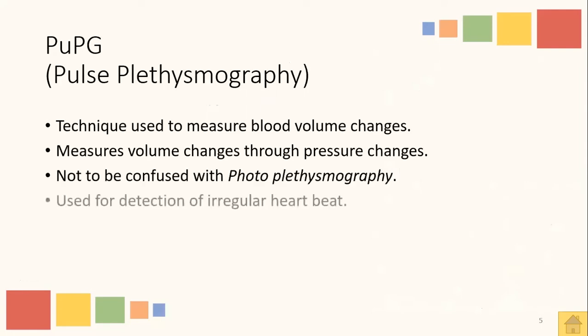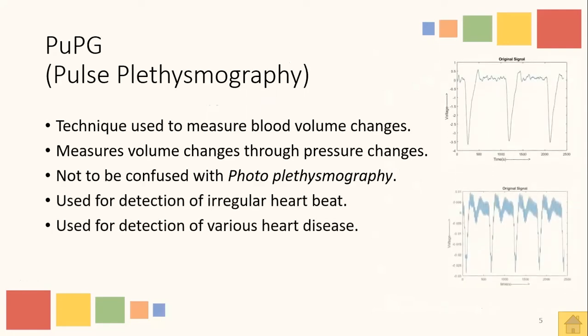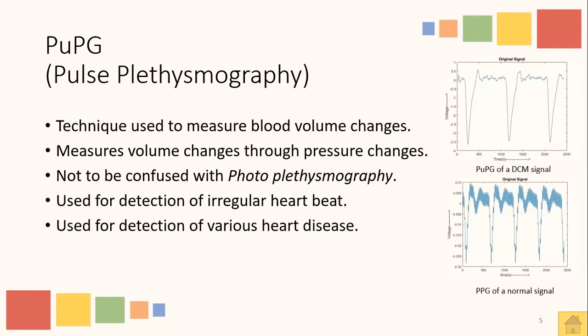Pulse plethysmography is a technique used to measure blood volume changes. It basically measures the pressure changes, and since we have a direct relationship between pressure and volume, pressure is directly used to measure volume changes in this technique. Pulse plethysmography should not be confused with photoplethysmography, in which infrared light is used to measure volumetric changes. Pulse plethysmography is used for the detection of various diseases and irregular heartbeats.